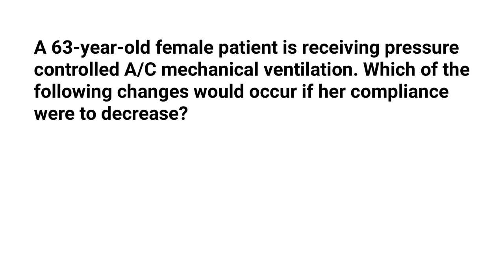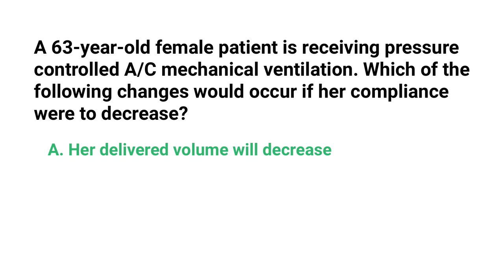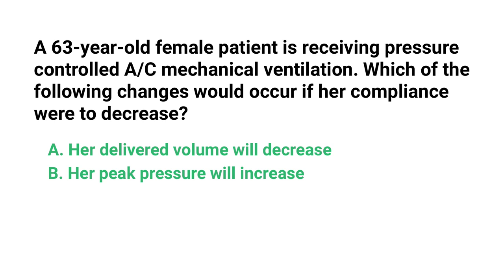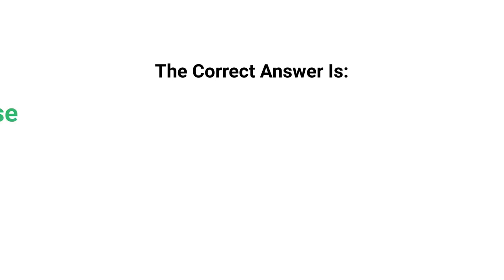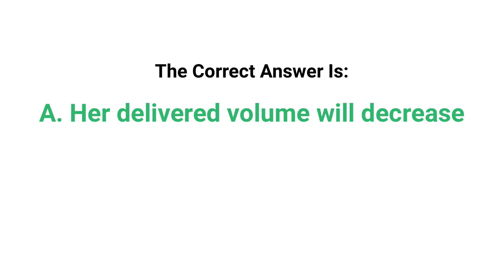A 63-year-old female patient is receiving pressure-controlled assist-control mechanical ventilation. Which of the following changes would occur if her compliance were to decrease? A) Her delivered volume will decrease, B) her peak pressure will increase, C) her inspiratory time will increase, or D) her PEEP level will decrease. The correct answer is A: her delivered volume will decrease.